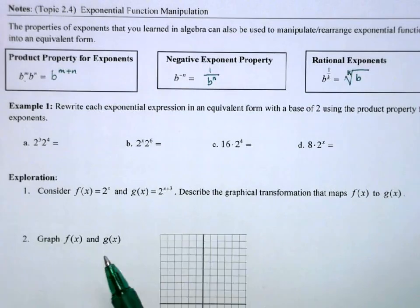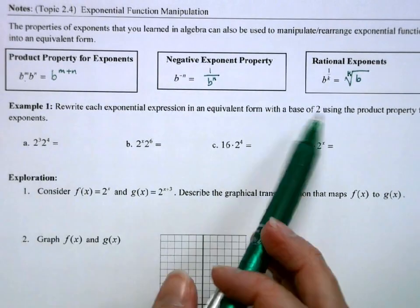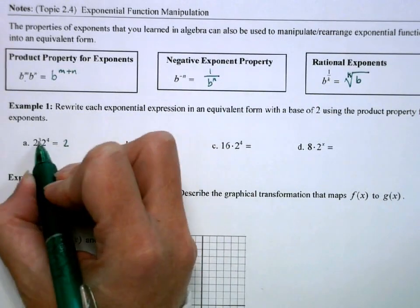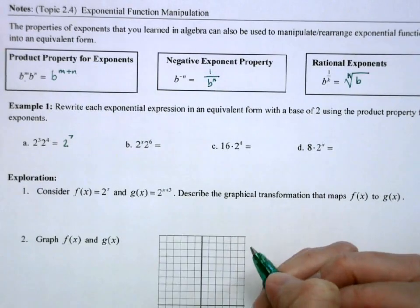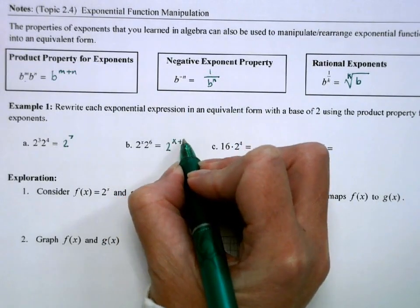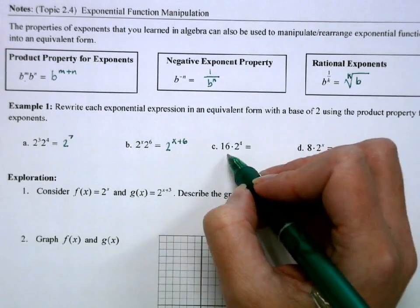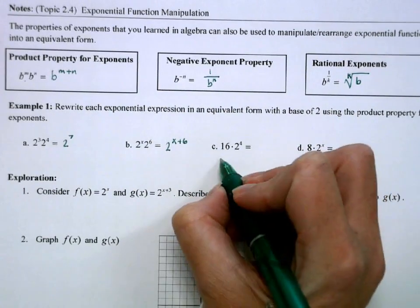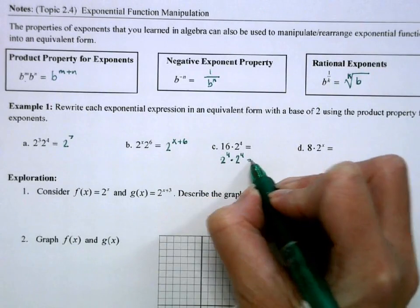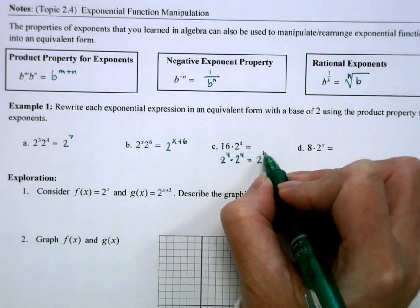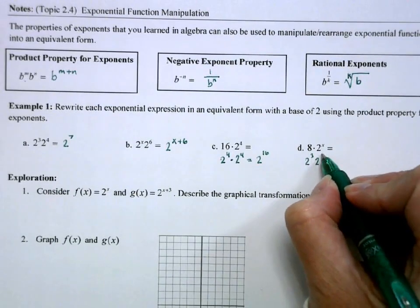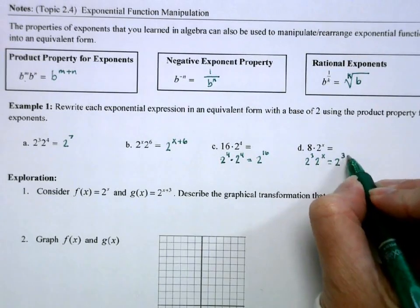So let's do some manipulation. Here I've got four different statements, and I'm going to rewrite them with a base of 2. So 2 cubed plus 2 to the 4th would be 2 to the 3 plus 4, which would be 2 to the 7th. 2 to the x times 2 to the 6th would be 2 to the x plus 6. Here I'm going to rewrite my 16 as a base of 2. So 2 to the 4th gives me 16 times 2 to the 4th. Now I can apply my product rule and make 2 to the 16th. 8 is 2 cubed, so we get 2 to the 3 plus x.